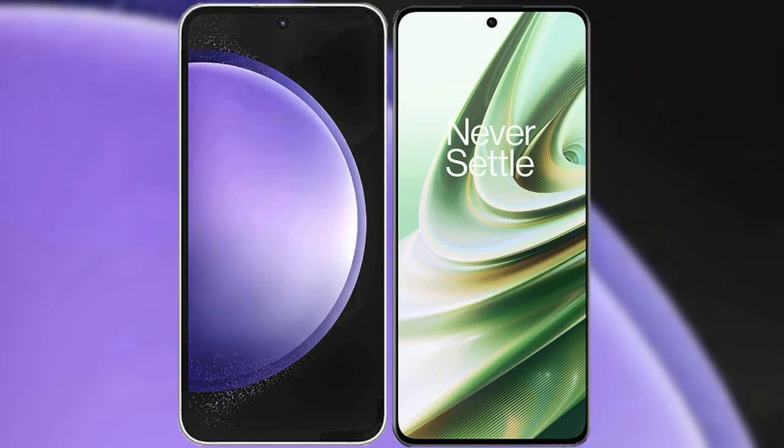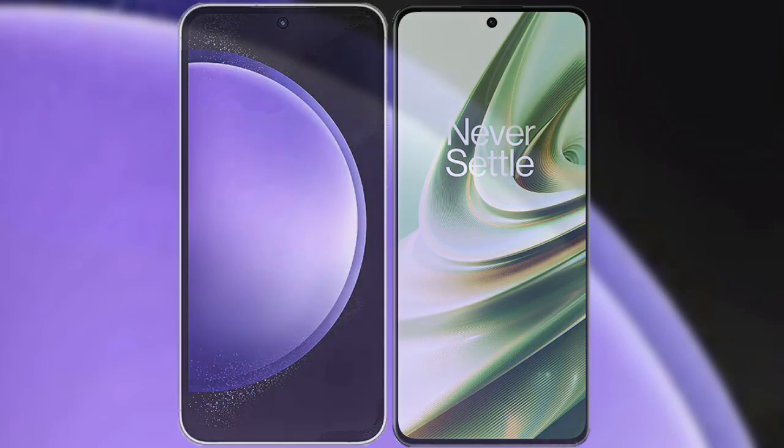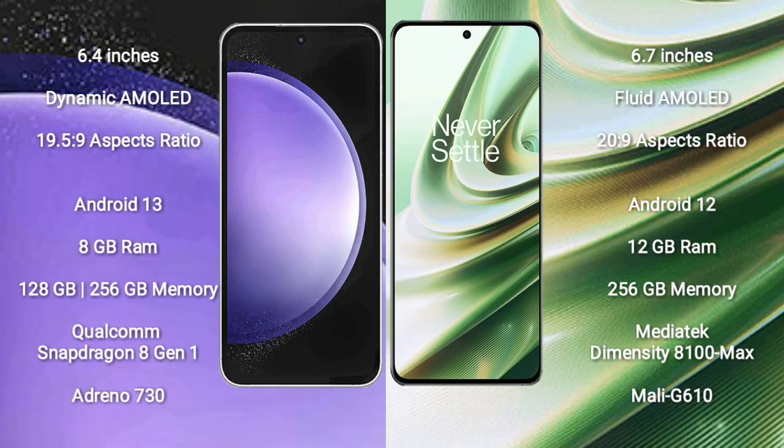I will compare the new Samsung Galaxy S23 FE with OnePlus 10R. Samsung Galaxy S23 FE comes with a 6.4-inch dynamic AMOLED display and aspect ratio 19.5:9. OnePlus 10R comes with a 6.7-inch flat AMOLED display and aspect ratio 20:9.